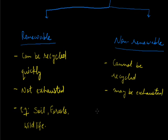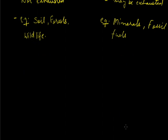The examples of non-renewable natural resources are minerals which are present in earth's crust, fossil fuels, etc. Now we'll study about non-renewable natural resources, mainly about fossil fuels.